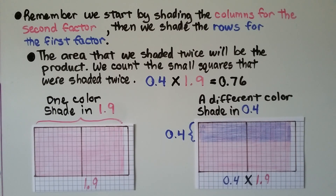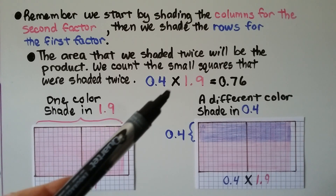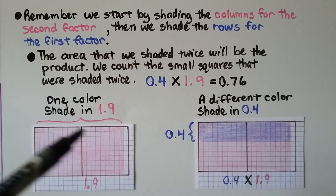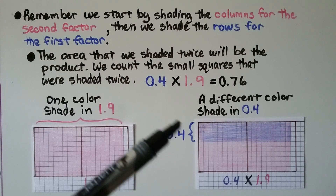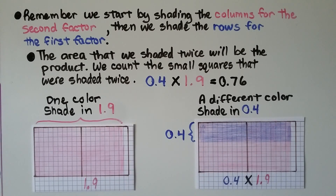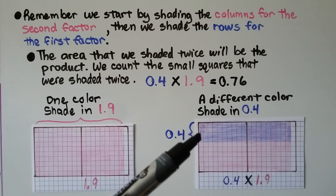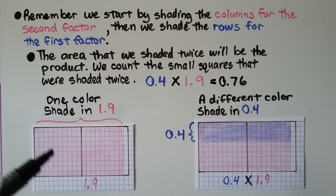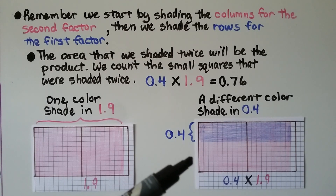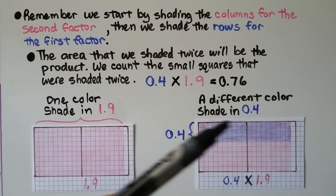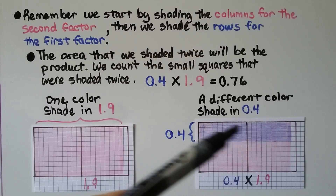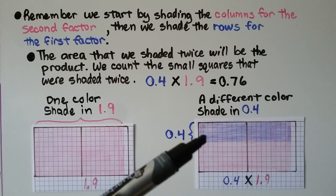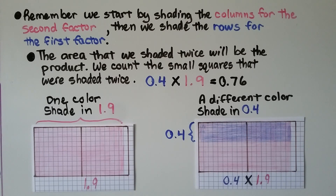We start by shading the columns for the second factor. For 4 tenths times 1 and 9 tenths, we shade the columns for the 1 and 9 tenths using one color — pink — then shade the rows for the first factor, the 4 tenths, in blue, going across. The area shaded twice is the product. We count the small squares shaded twice: there are 76 of them. Each small square is 1 hundredth, so the product equals 76 hundredths.